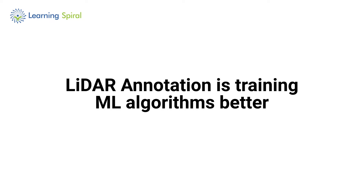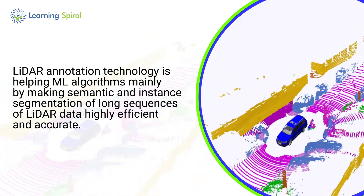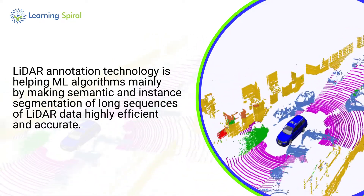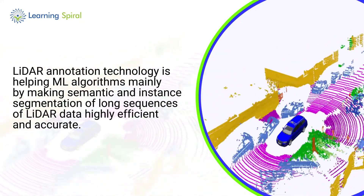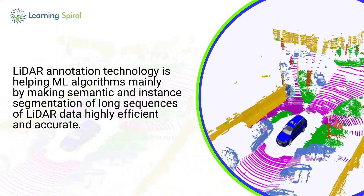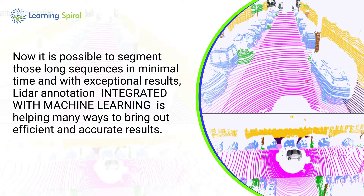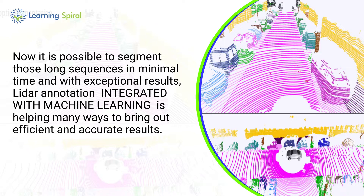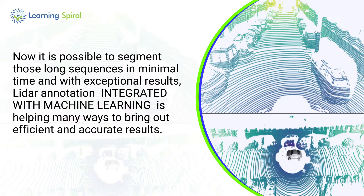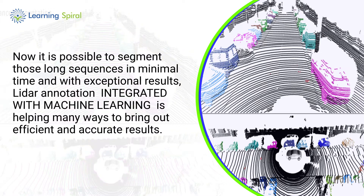LiDAR annotation is training ML algorithms by making semantic and instance segmentation of long sequences of LiDAR data highly efficient and accurate. It is now possible to segment those long sequences in minimal time and with exceptional results. LiDAR annotation integrated with machine learning is helping in many ways to bring out efficient and accurate results.